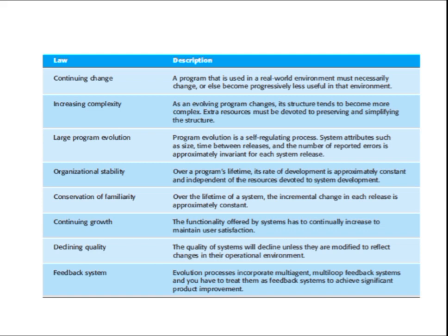The sixth law is Continuing Growth: the functionality offered by software has to continually increase to maintain user satisfaction. You should keep adding features in such a way that they always maintain user satisfaction. You are developing the software for the user, so obviously if a user is not satisfied, what is the use of developing that software? The extra features you add should always help the user and the user should be satisfied.